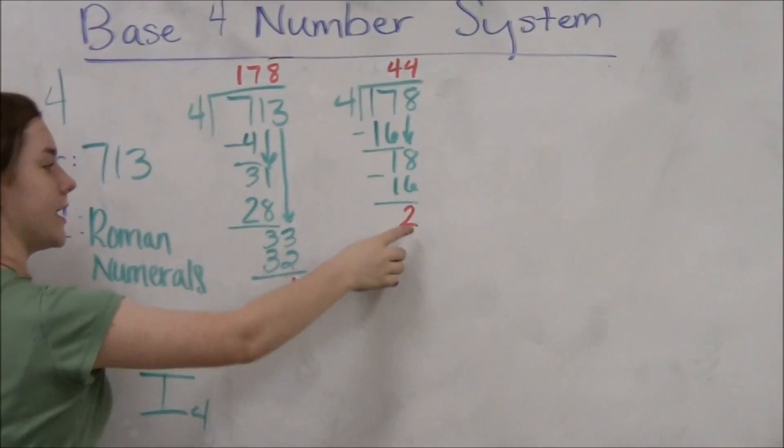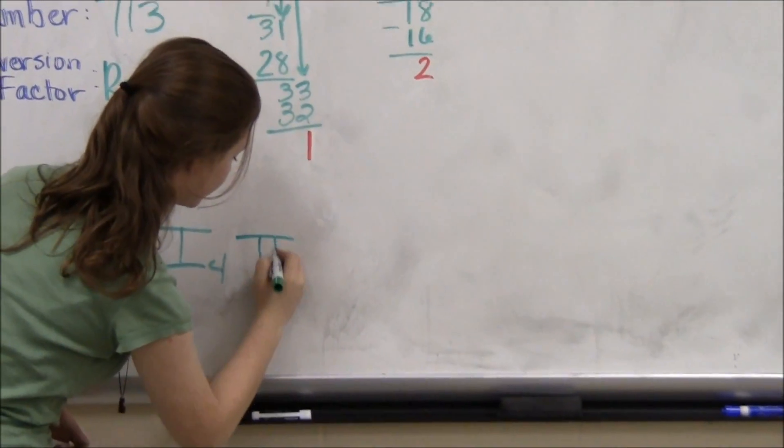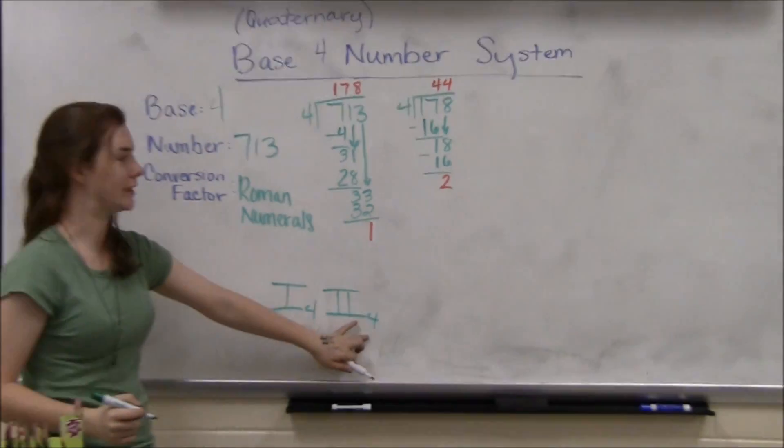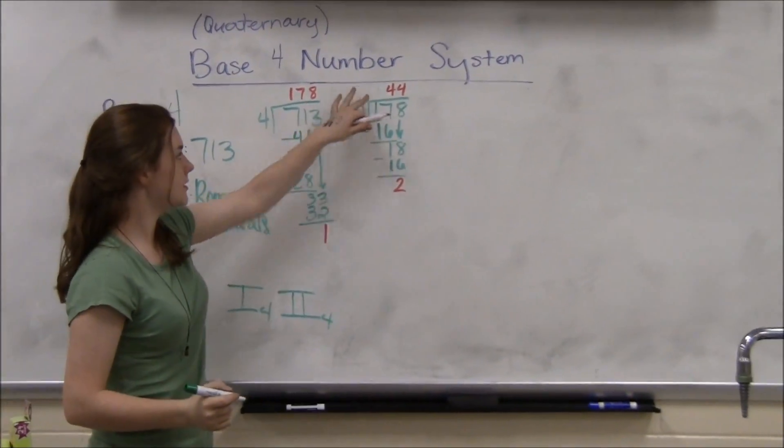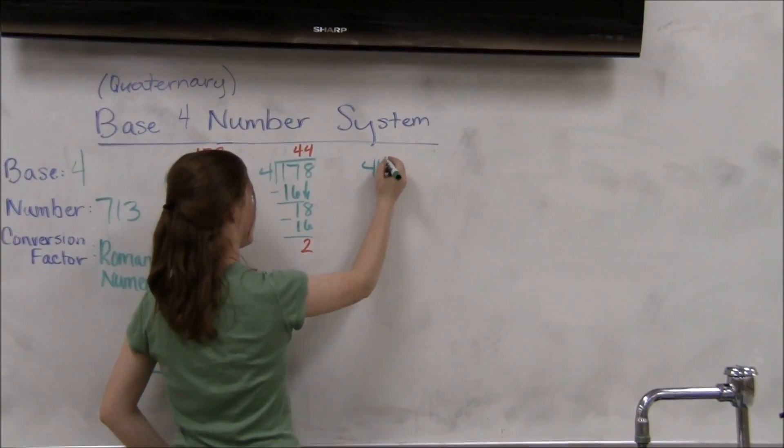Like the first problem, we'll take the remainder of 2 and put it here in Roman numerals. Roman numeral ii with a base of 4. We'll then take the 44 and divide it again by 4.